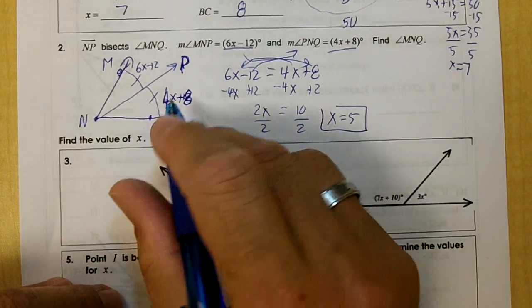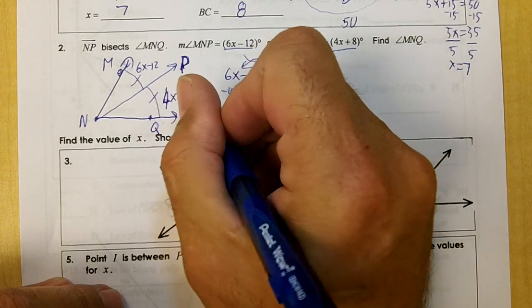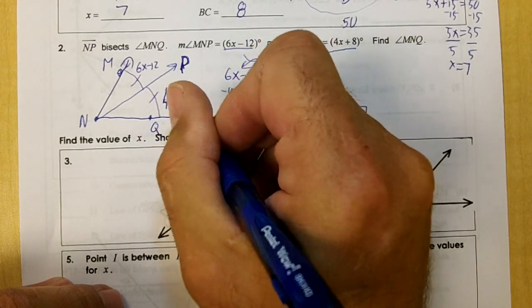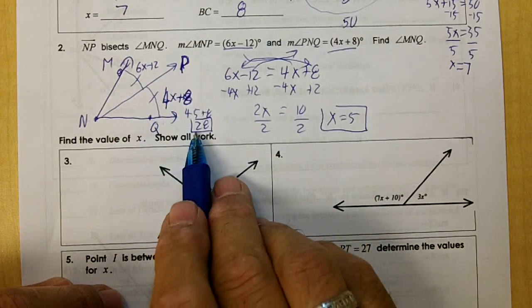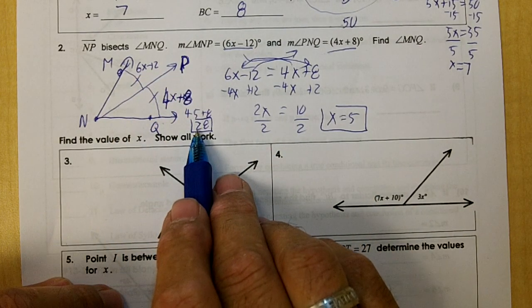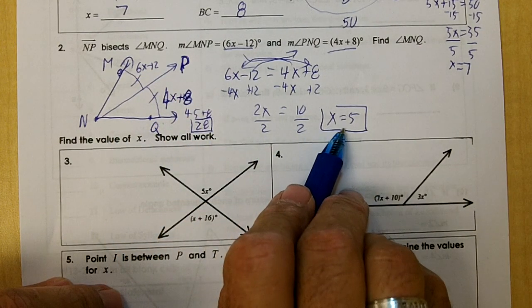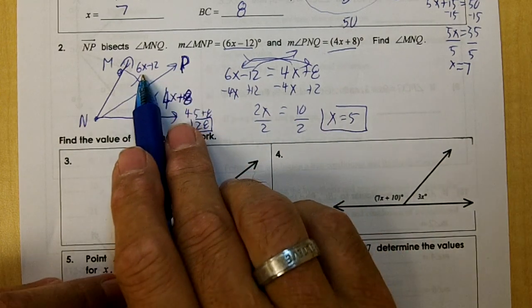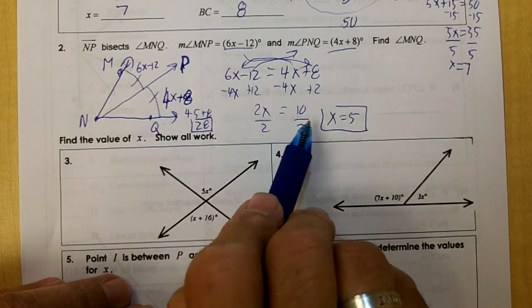Now we've got to go back and plug 5 in. 4 times 5 plus 8 is 28. 6 times 5 would be 30, minus 12 would be 18. Where did I mess up here?